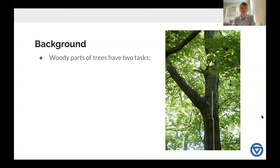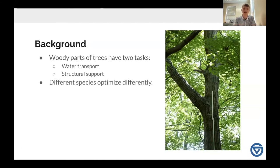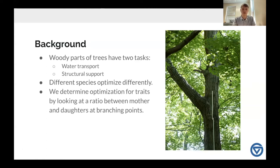A little bit of background first: the woody parts of a tree have two main tasks — they have to transport water and support the structure of the tree. Different species optimize for these things differently. We experimentally figure out this optimization by looking at different models via a ratio between mother and daughter branching points. The mother is before a branching point and the two daughters are after, and the ratio between those two is what the actual models look at.